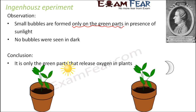So the two key outputs of this experiment were: oxygen is released only from the green parts of the plant, and oxygen is released only in the presence of sunlight. Sunlight and the green parts are both important factors. This also aligns with the process of photosynthesis, which takes place in the presence of sunlight, releases oxygen, and occurs only in green plants. Scientists went on to further investigate what was special about the green parts that allowed them to release oxygen.